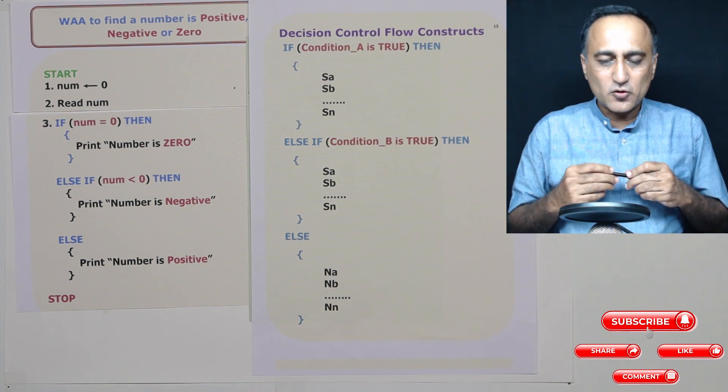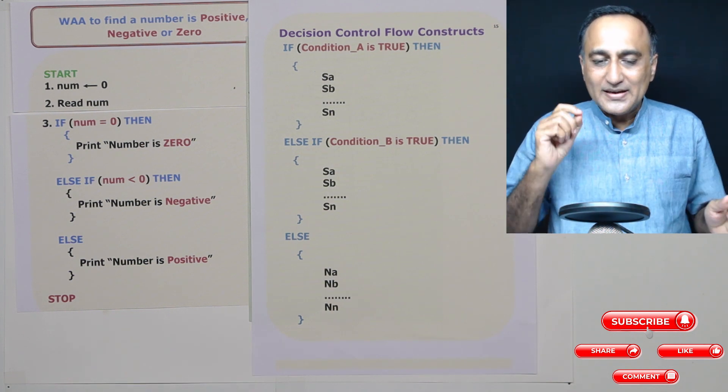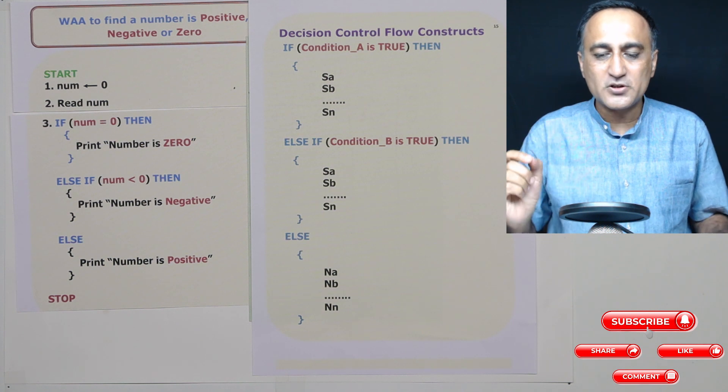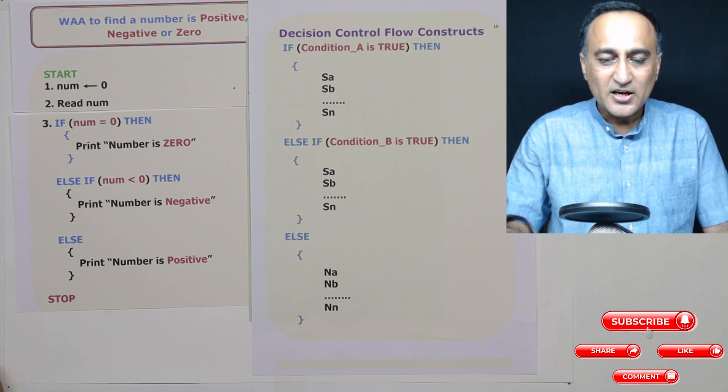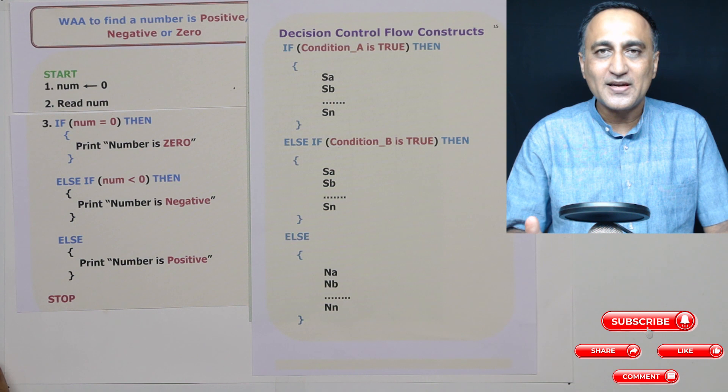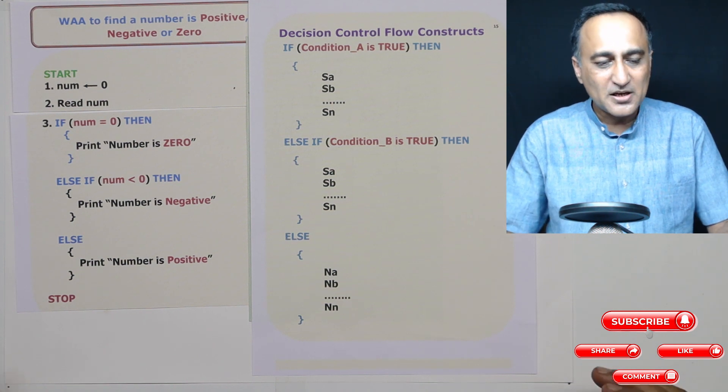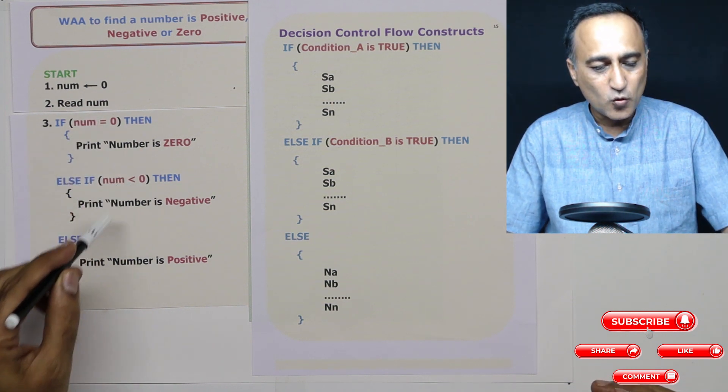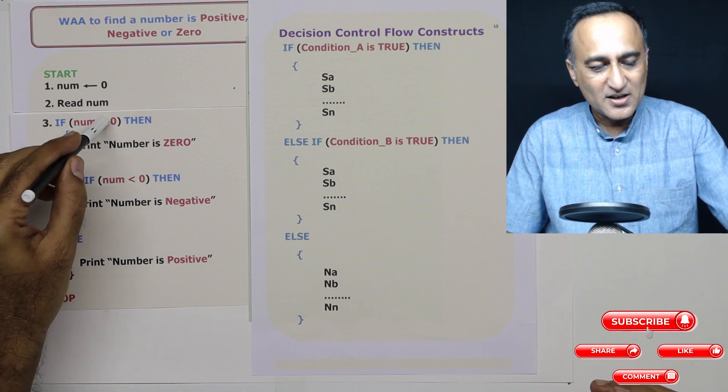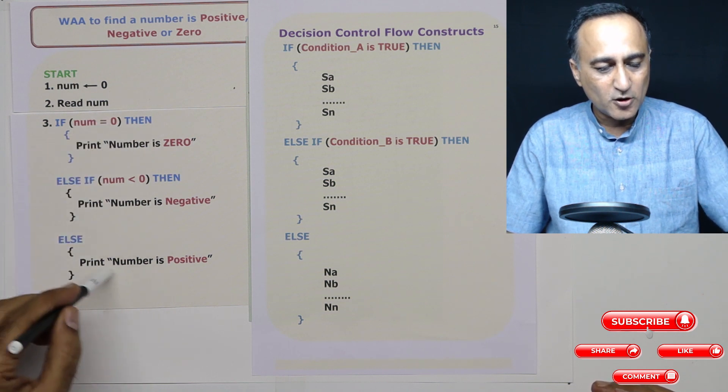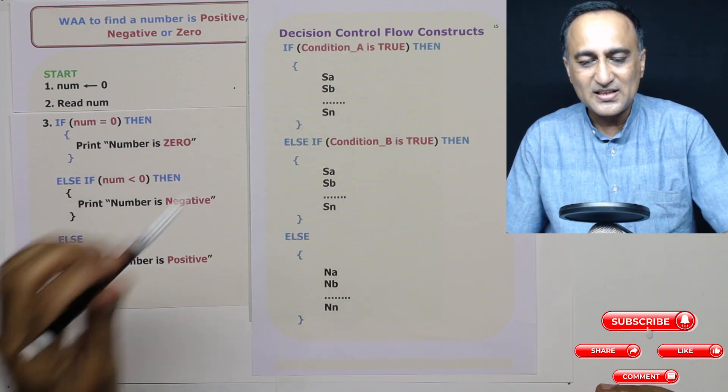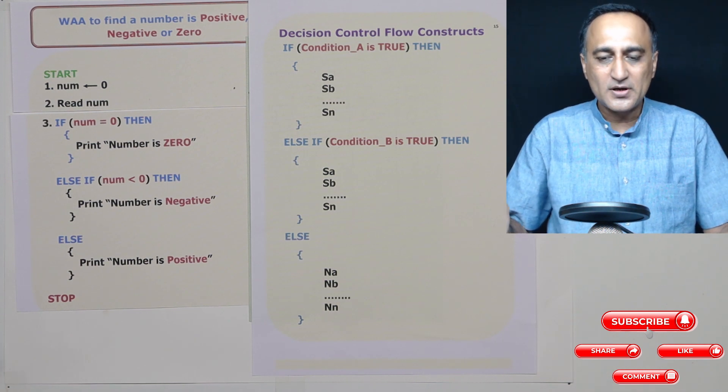So this should give you an idea of one more decision control flow statement or a general construct which changes the flow of execution of the instruction based on whether the condition is true or false. So if the condition is true, it will do this and not at all do this. That's why it is called as a decision control flow statement.